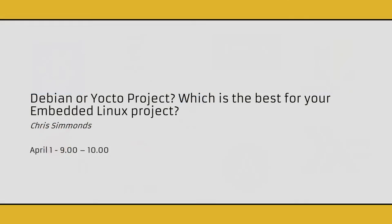The first session of Wednesday is Chris Simmons talking about Debian or Yocto project — which is the best for your embedded Linux projects. For someone who has been working in embedded Linux, I have been using the Yocto project a lot, so that obviously gets my attention. And the idea of using Debian instead as a quick start thing is intriguing to me.